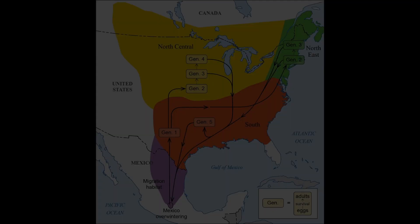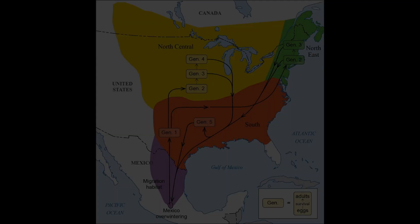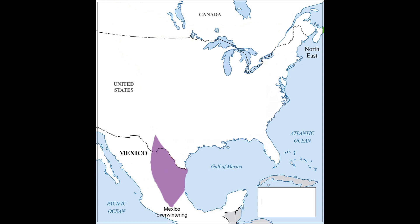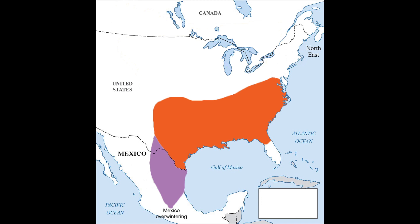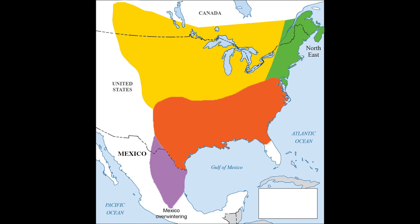An example of a model we're using now: we divided the range of the eastern migratory population of monarchs into four different areas. One area is Mexico, where they migrate through and overwinter. The orange area is their southern range where the first generation breeds in the spring. The yellow is the north-central region of the United States where the majority of monarchs go. And the green is an area east of the Appalachian Mountains where some monarchs move up.